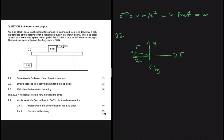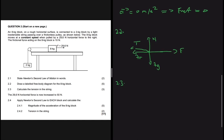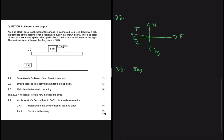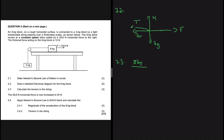Question 2.3 asks for the tension in the string. I'm choosing the 8 kg block — not because it's my favorite, but because I'll write all the given information for it and see if I can get to the answer. Usually in questions like this, the answer from 2.1 helps with 2.2, and 2.2 helps with 2.3. Since 2.2 used the 8 kg block, it's most likely that 2.3 will too.